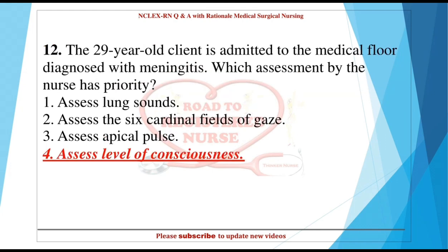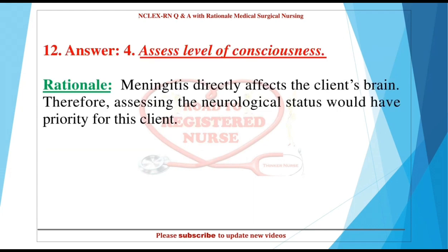Question 12: The 29-year-old client is admitted to the medical floor diagnosed with meningitis. Which assessment by the nurse has priority? 1. Assess lung sounds. 2. Assess the six cardinal fields of gaze. 3. Assess apical pulse. 4. Assess level of consciousness. Answer: 4. Assess level of consciousness. Rationale: Meningitis directly affects the client's brain; therefore, assessing the neurological status would have priority for this client.